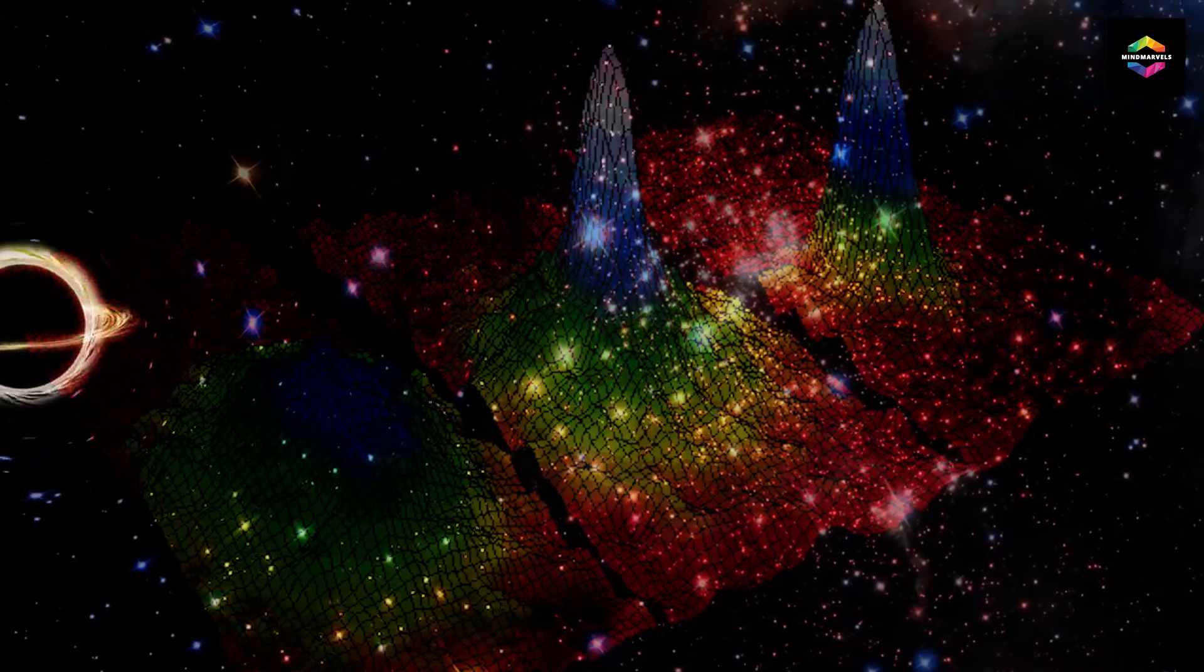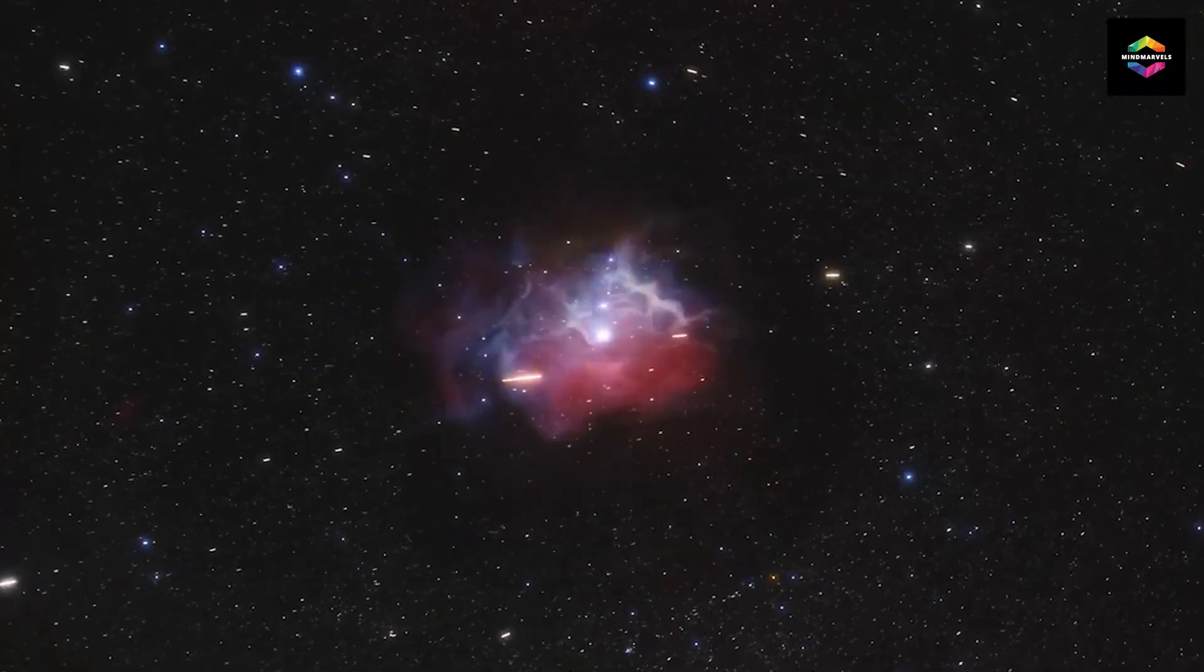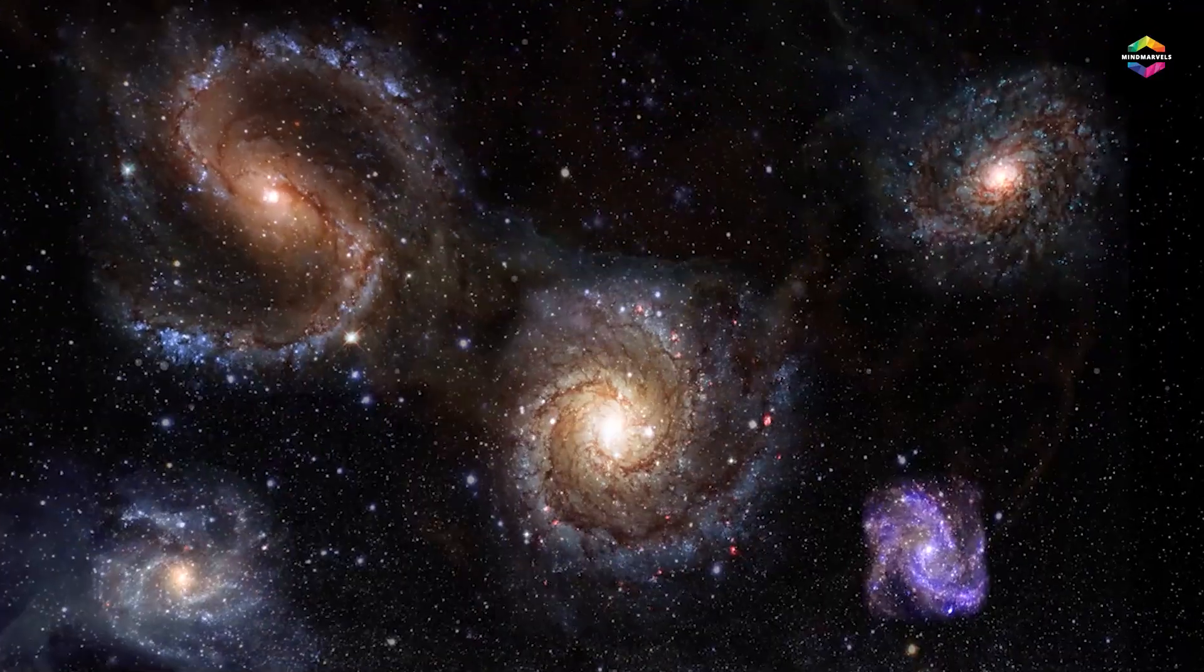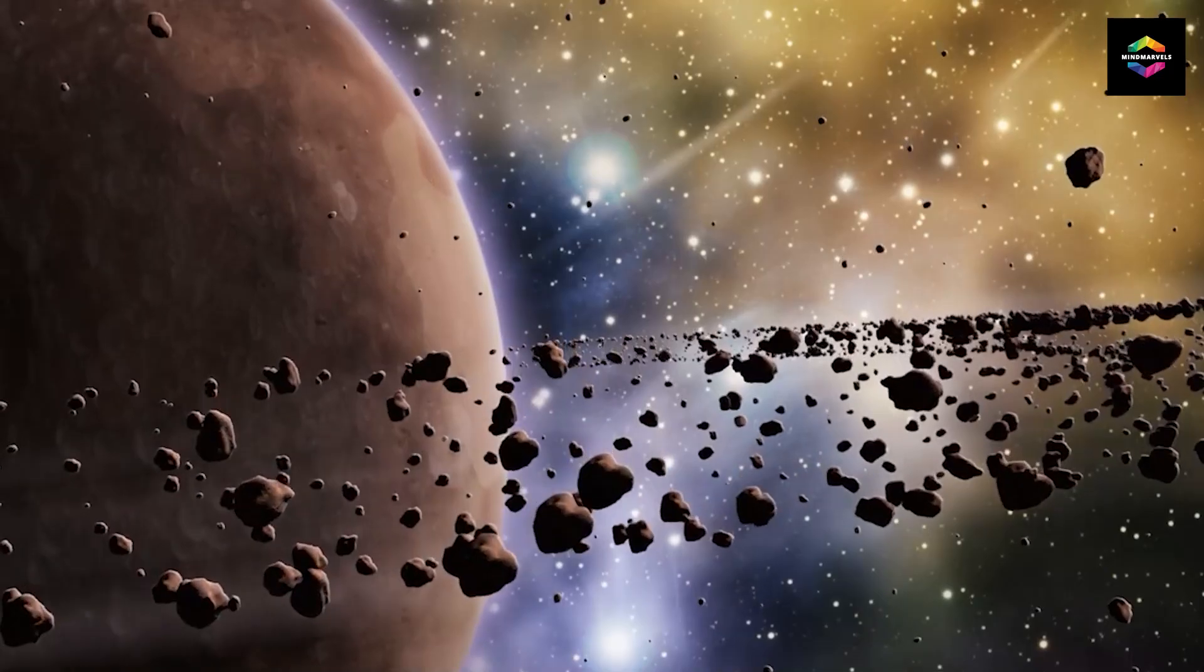On the other hand, temperatures of several thousand degrees Celsius can be found in objects that are close to stars or other radiation sources. These enormous temperature changes highlight the different and harsh conditions that exist all over the vast expanse of space.